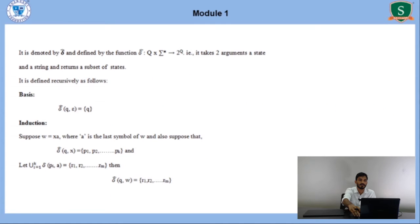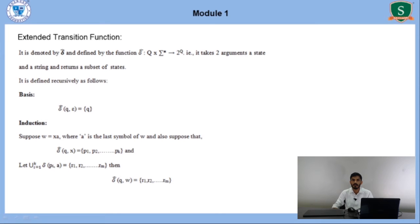Next, we will see the extended transition function of NDFSM. The extended transition function is defined by the notation delta-cap. It takes two arguments: a state and an input string, and it returns a subset of states. It is defined by a recursive definition. The basis part says: δ-cap(Q, ε) = Q. The induction part says: suppose W = Xa, where A is the last symbol of W, and δ-cap(Q, X) gives some set of states {P1, P2, ..., Pn}. Then δ-cap(Q, W) = union of δ(Pi, a) for all i.